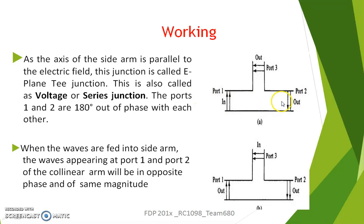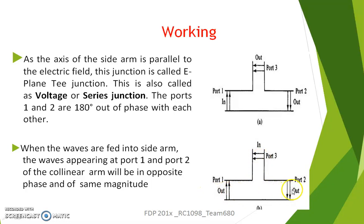The ports 1 and 2 are 180 degrees out of phase with each other — a very important point to remember. So if a wave is fed into the side arm, that is port 3, the waves appearing at port 1 and port 2 will be in opposite phase with each other and of the same magnitude.